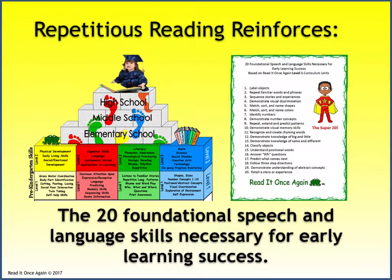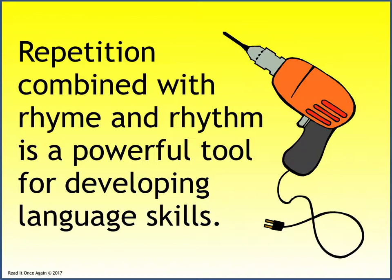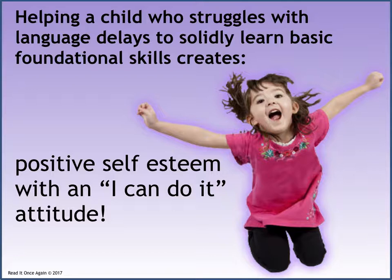Repetitious reading reinforces the 20 foundational speech and language skills necessary for early learning success. When children are able to predict familiar words and phrases, they become focused on the story and this increases their attention span. One different Mother Goose rhyme is included in each unit — Read It Once Again encourages teachers to repeat the rhyme each day. Rhyme, rhythm, and repetition is an extremely powerful tool for developing both receptive and expressive language skills. If you use music to sing your rhymes, it provides even more strength to the neural pathways. In addition to teaching language and foundational skills, Read It Once Again's mission is to promote the love of books and reading at a very young age — it is our passion to create lifelong readers. Repetition of language and foundational skills helps children accomplish success, creating positive self-esteem. The 'I Can Do It' attitude is a powerful, motivating tool that fuels the momentum for continued success.